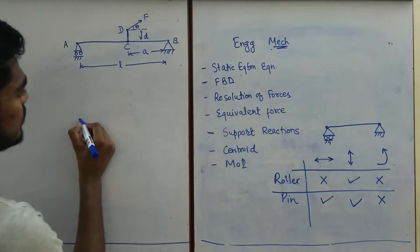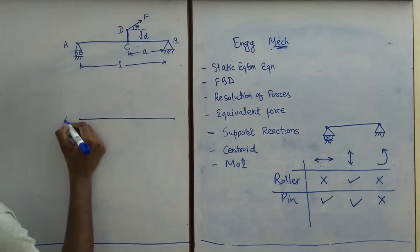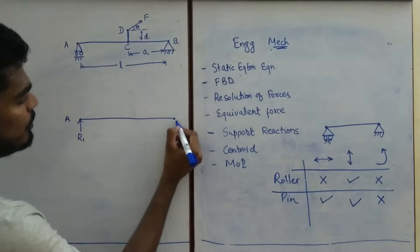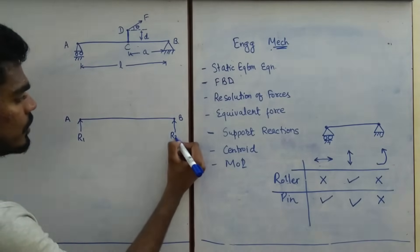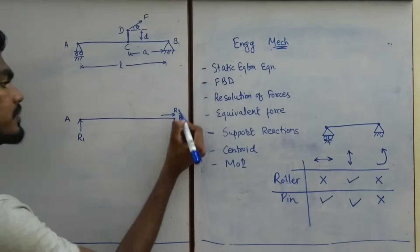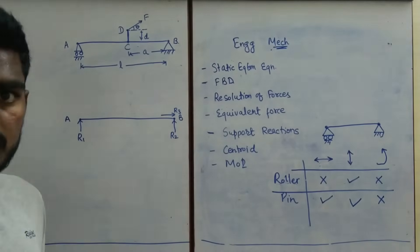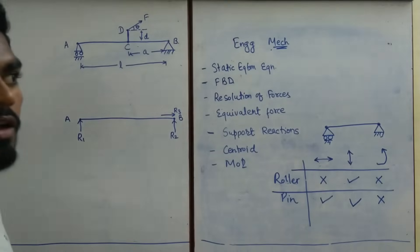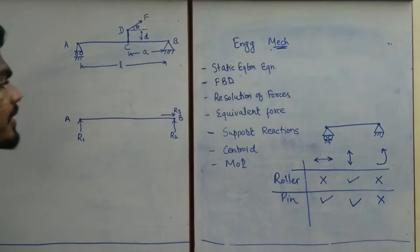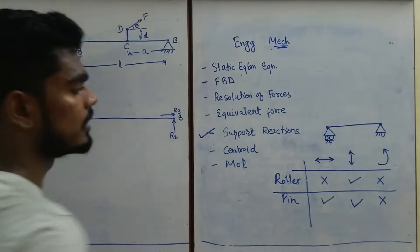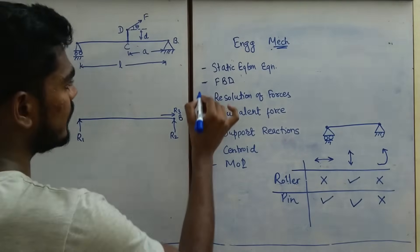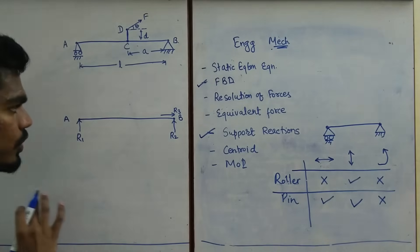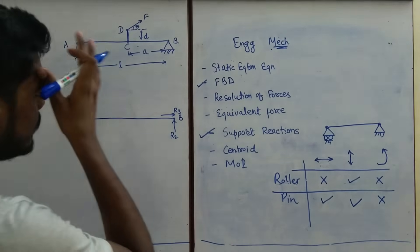Now let's apply these reactions to the example. At point A (roller), there is going to be only one reaction — let's call it R1. At point B (pin), there are going to be two reactions: R2 and R3. Regarding direction, we can assume either direction; the calculations will automatically give us the correct sign and final direction. Now we have established the support reactions and we are making a free body diagram, putting all the forces that are acting.